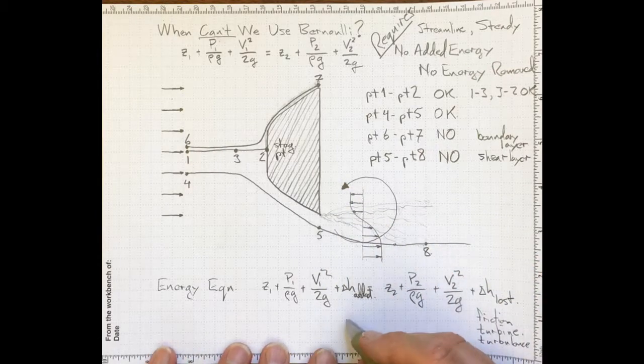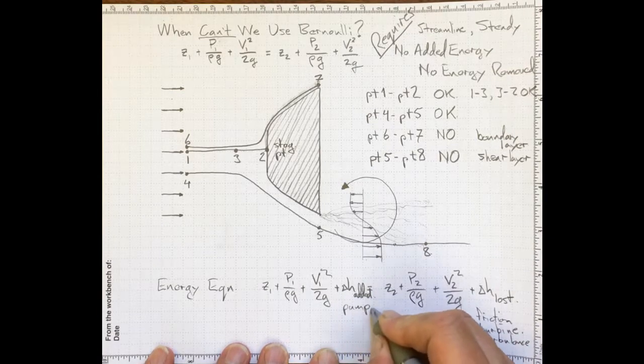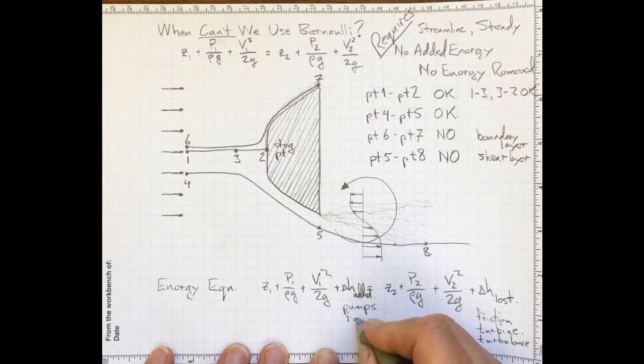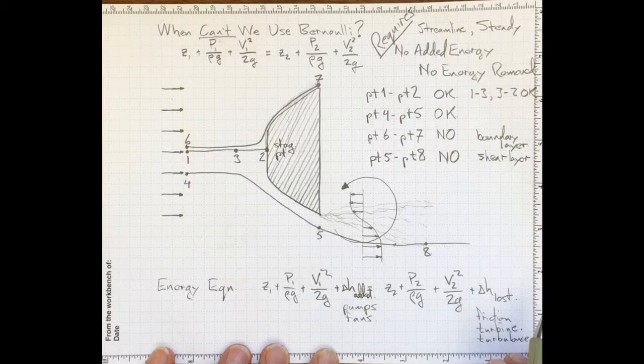Things that might add energy to the flow: pumps, if we were in a pipe flow, or fans, if we were in an air flow with blowing air, anything that adds energy to the flow to speed it up or increase the pressure.